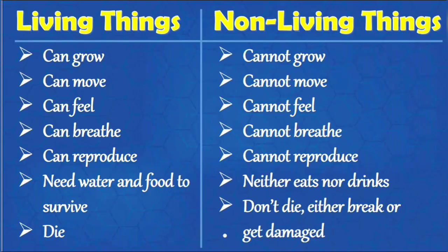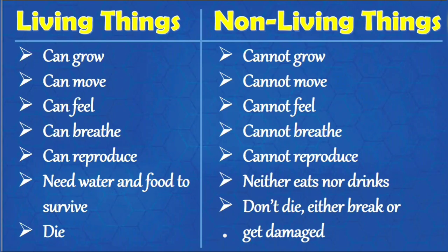Now let us see the difference once again to revise. Living things and non-living things. Living things: they can grow, move, feel, breathe, and reproduce. They need water and food to survive, and they die. Whereas non-living things: they cannot grow, cannot move by their own, cannot feel, cannot breathe, cannot reproduce. They neither eat nor drink. They don't die — they either break or get damaged.